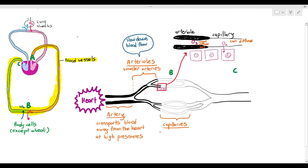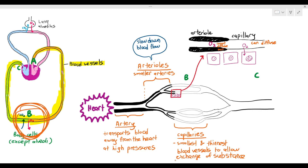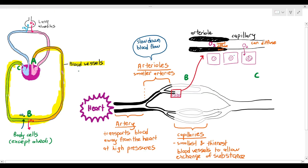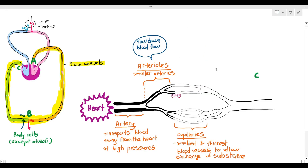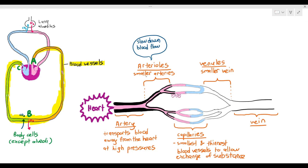That is why capillaries need to have extremely thin walls — it is to allow exchange to happen. Capillaries are just basically the smallest and thinnest blood vessels to allow the exchange of substances. The exchange of substances happens at the body cells: oxygen will diffuse into the body cells, and carbon dioxide will diffuse from the body cells into the blood, making the blood deoxygenated. Once exchange happens in the capillaries, the blood becomes deoxygenated and drains into venules, which are smaller veins, and from there they return to the heart.